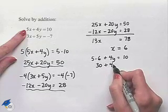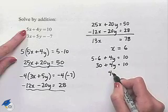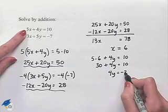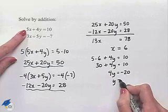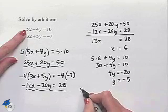30 + 4y = 10. Subtracting 30 from both sides, 4y is going to equal -20, and dividing by 4 gives us y = -5. That gives us a solution of